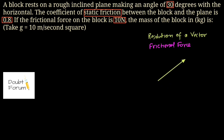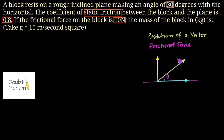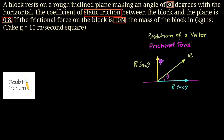Suppose there is a vector making a certain angle theta with the horizontal surface. We can split this vector into two components — one in the horizontal direction and one in the vertical direction. If the magnitude of this vector is r, the magnitude of its horizontal component would be r cos theta and the vertical component would be r sin theta. This is how we split a vector into its components, making it easier to analyze.